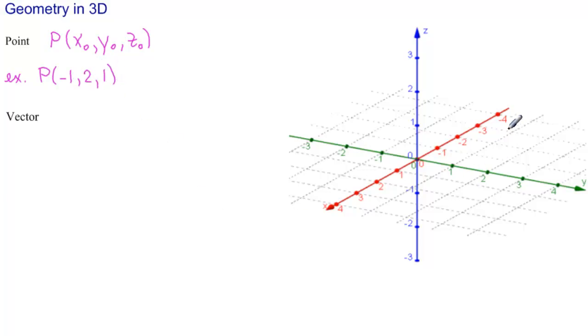So where is that point here? This is our x-axis, so we'll go minus 1 on our x-axis, and then our y is down this way, 2 on the y, and then 1 up on the z-axis. So this is our point p.